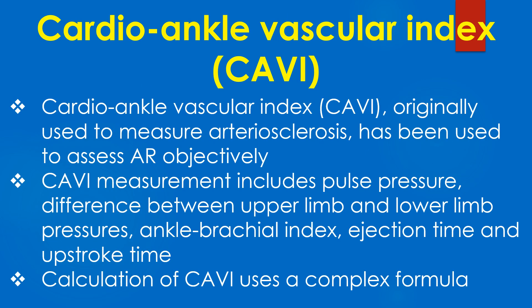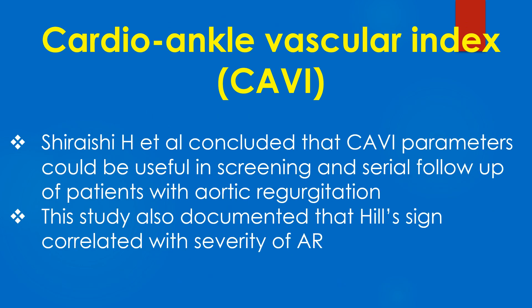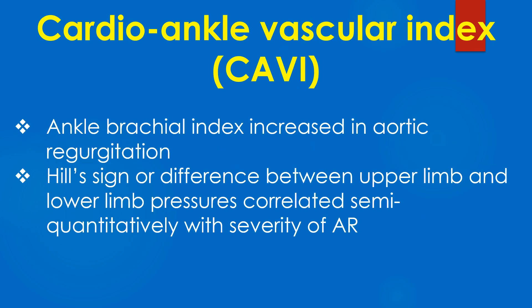The cardio-ankle vascular index (CAVI), originally used to measure arteriosclerosis, has been used to assess AR objectively. CAVI measurement includes pulse pressure, difference between upper and lower limb pressures, ankle-brachial index, ejection time, and upstroke time, calculated using a complex formula. Shirazi and associates concluded that CAVI parameters could be useful in screening and serial follow-up of patients with aortic regurgitation, and that Hill sign correlated with severity of AR. Ankle-brachial index was also found to be increased in aortic regurgitation, and the difference between upper and lower limb pressures correlated semi-quantitatively with severity of AR.